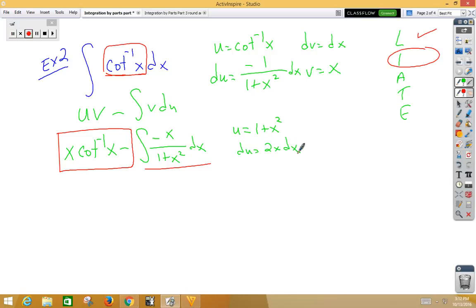So du is 2x dx. To get a 2x dx, we're actually going to have to multiply by a negative 2, which would give us a negative half on the outside. Double negative makes a positive. So now I've got a one-half integral, 1 over u du. Notice that's natural log. Bring the rest down, we've got x inverse cotangent x plus a one-half natural log, absolute value, 1 plus x squared plus c.